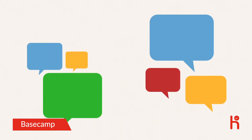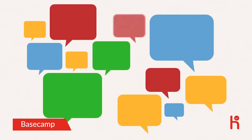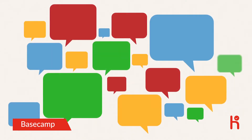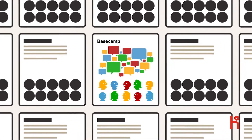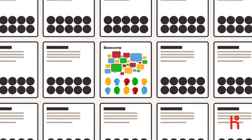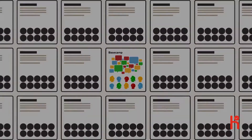A project is communication. It's talking it out and sharing with your team. Basecamp is about projects. Basecamp is about getting stuff done.